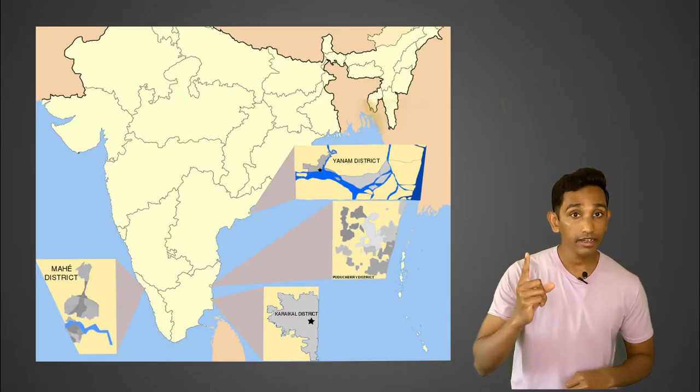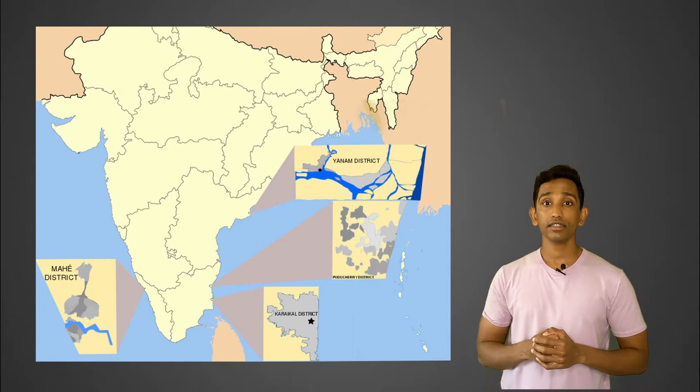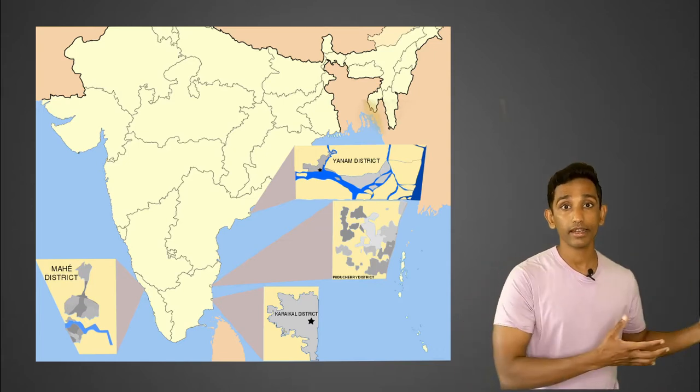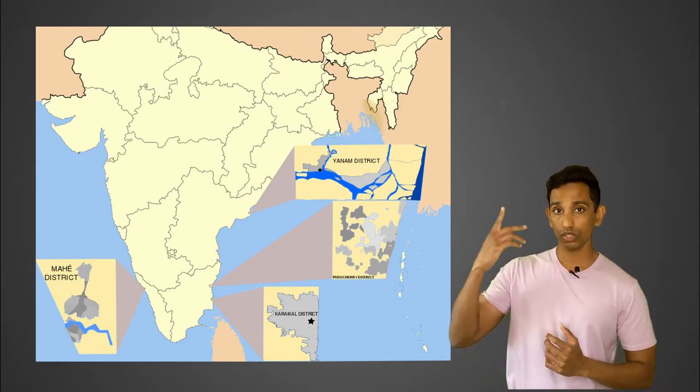I think the Union Territory of Puducherry is surrounded by Tamil Nadu, but actually only one of the districts — the Puducherry district — is surrounded by Tamil Nadu. There are also three other districts: Karaikal, which is also surrounded by Tamil Nadu; then there is Mahe, which is on the other coast, surrounded by Kerala; and then there is Yanam, which is to the north, in Andhra Pradesh. One Union Territory is distributed across three different states.